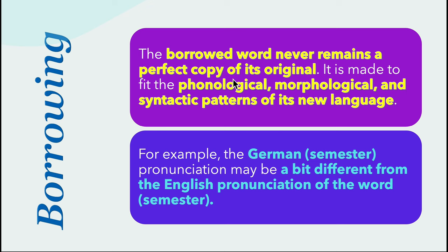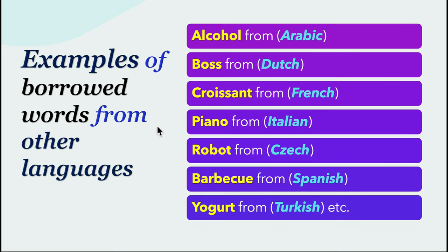The borrowed word never remains a perfect copy of its original; it is made to fit the phonological, morphological, and syntactic patterns of its new language. For example, the German word 'semester' may be pronounced slightly differently in English. Examples of borrowed words: alcohol from Arabic, boss from Dutch, correspondent from French, piano from Italian, robot from Czech, barbecue from Spanish, yogurt from Turkish, etc.